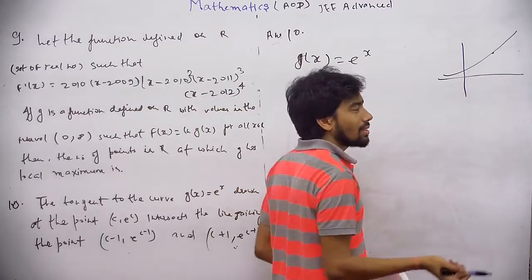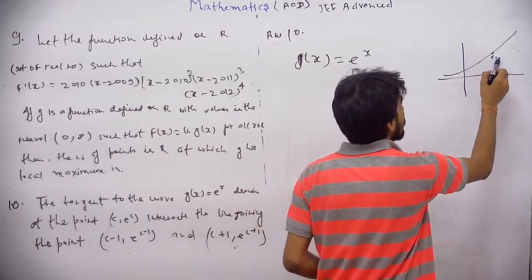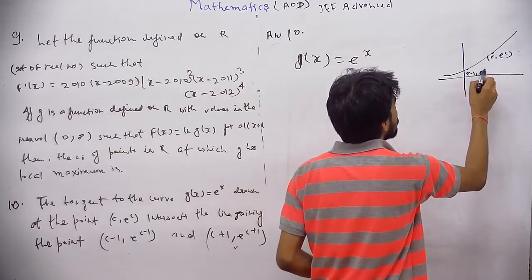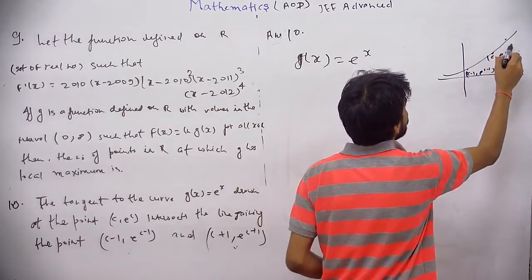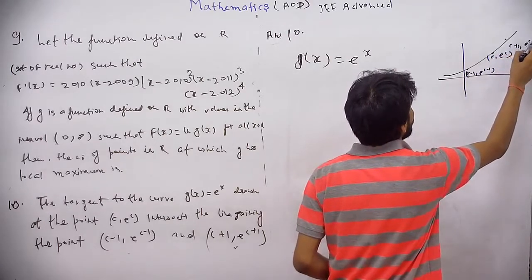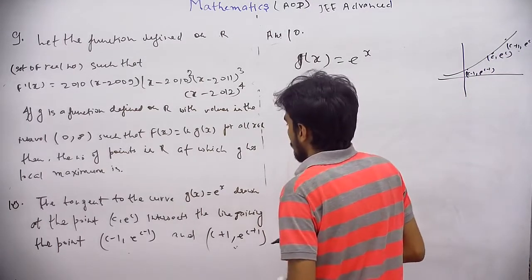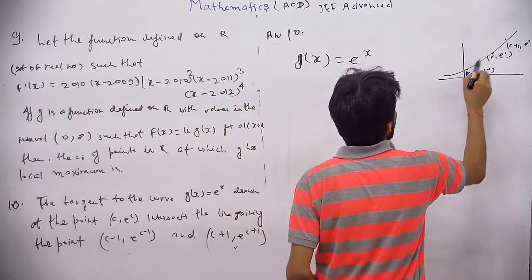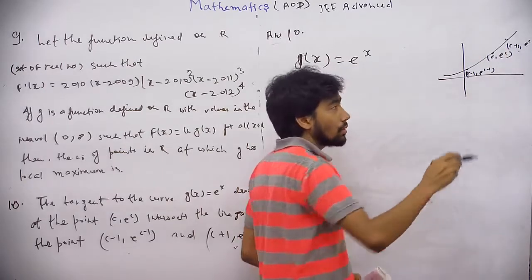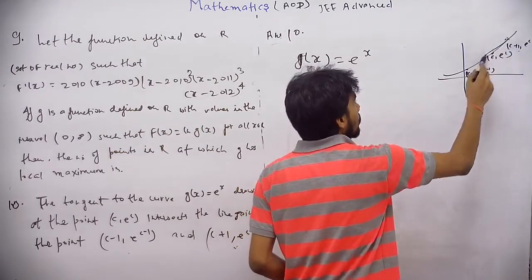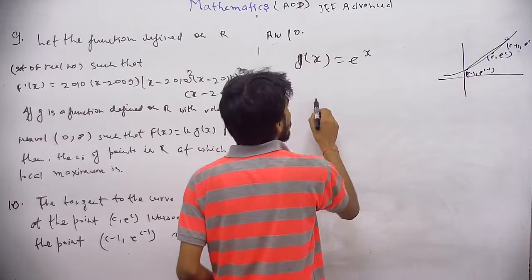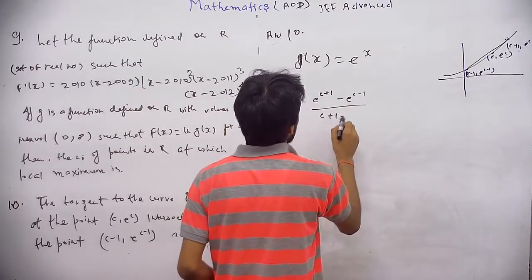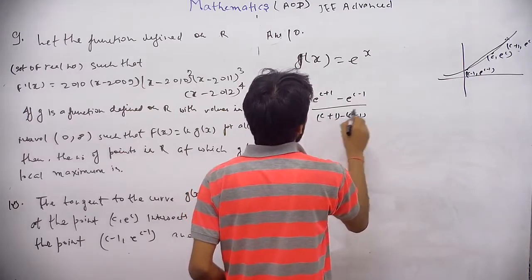And (c-1, e^(c-1)). So first take the slope of this line. Line joining these two points. It will be (e^c - e^(c-1))/(c - (c-1)).